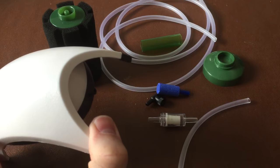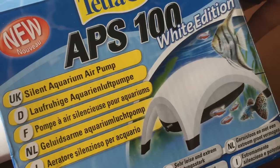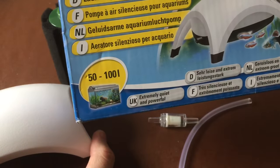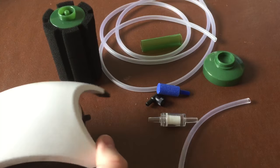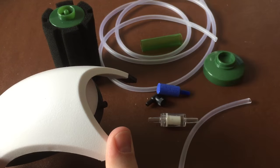I have an APS 100 air pump which does tanks for 50 to 100 liters and it has one outlet. You can get ones with dual outlet so you could have one pump doing two lines in two different tanks, but this only has one.